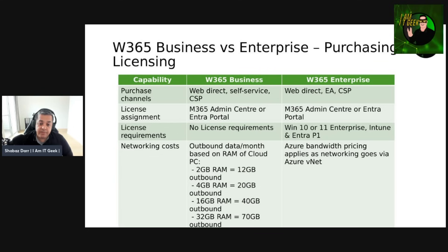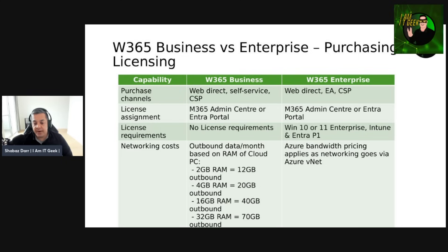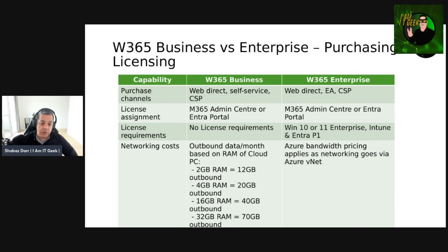From a networking cost perspective, for Windows 365 Business, outbound data per month is based on the RAM of the cloud PC. With 2GB RAM it's 12GB outbound, 4GB RAM gets you 20GB outbound, 16GB RAM gets you 40GB outbound, and with 32GB of RAM you get 70GB outbound. With Windows 365 Enterprise, Azure bandwidth pricing applies as the networking goes via Azure VNet. For seat limits, Windows 365 Business is capped at 300 seats per tenant, and with Windows 365 Enterprise there's no seat cap — it's unlimited.